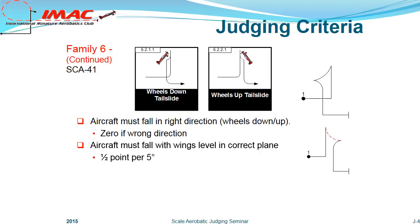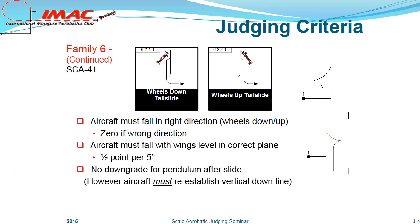The aircraft must fall with wings level in the correct plane. Deviations are downgraded at one half point per five degrees. Pendulum movements after the slide has been completed are likely and are not downgraded. The pilot, however, must re-establish a true vertical downline. As with Family 5, the downline reference point is established after taking into account the wind drift while the aircraft is in a stalled or near stalled condition.